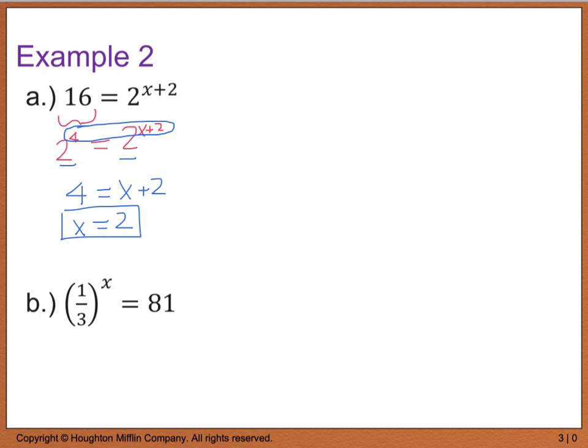Likewise, for part b, I have 1 divided by 3. I'm going to raise that whole thing to the x power, and this is going to give me 81. So I'm going to rewrite this. Because I have 1 third, I'm going to rewrite this as 3 to the negative x equals 81. And because I can rewrite 81 as 3 to the 4th, this tells me then that I can equate my exponents because I have the same base. So I have negative x equals 4 or x equals a negative 4. So I can use that one-to-one property to help me establish these rules and guidelines.